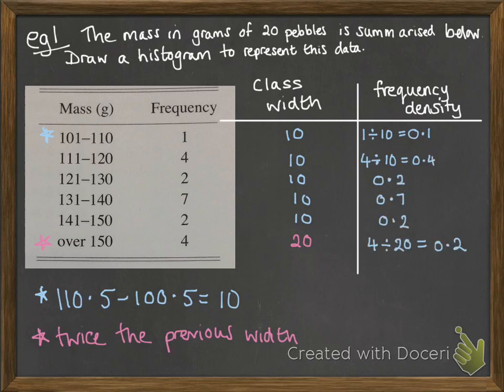Then our frequency densities, we're just working out as the frequency divided by the class width gives us the frequency density for each of those as you go down the table.